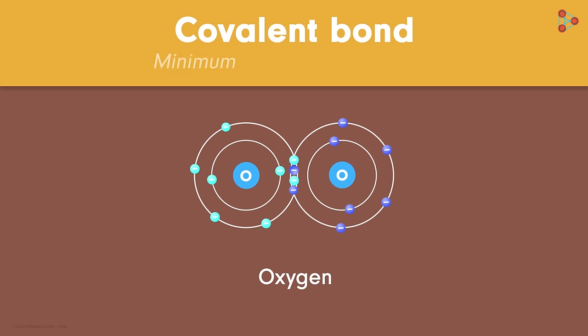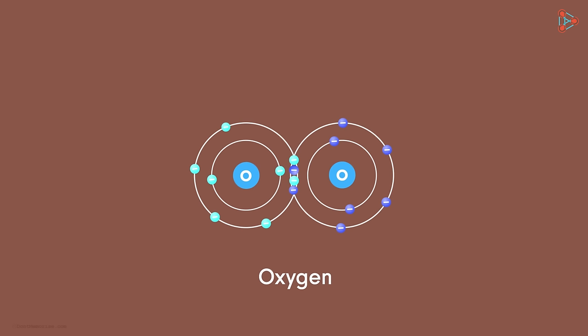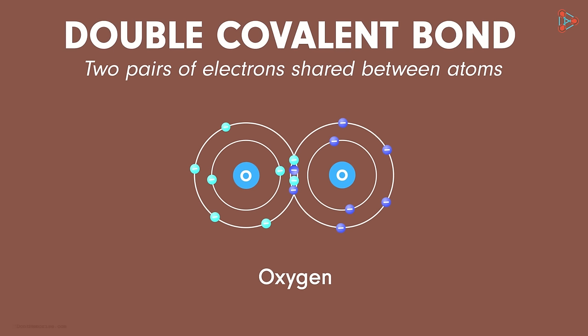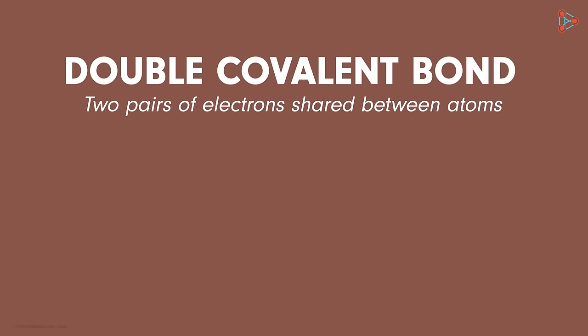Don't forget, it is a minimum of one pair that's needed for formation of the covalent bond. That means this case is also an example of a covalent bond. Such a covalent bond which involves two pairs of electrons getting shared is called a double covalent bond. It is represented by two lines written between the two atoms. Just like this as seen in case of oxygen.